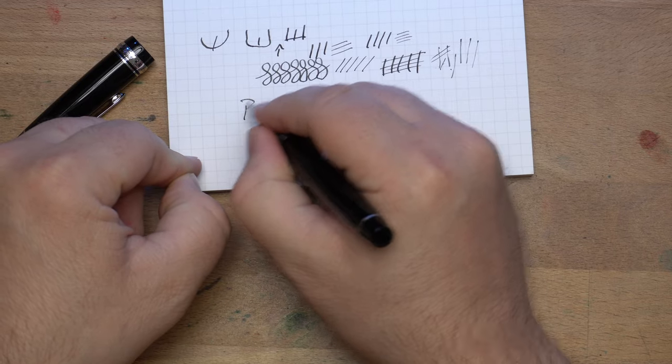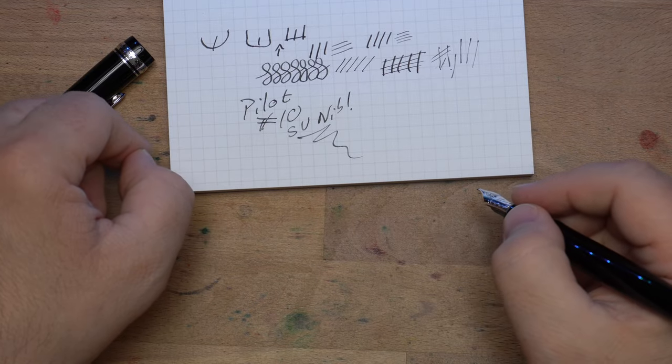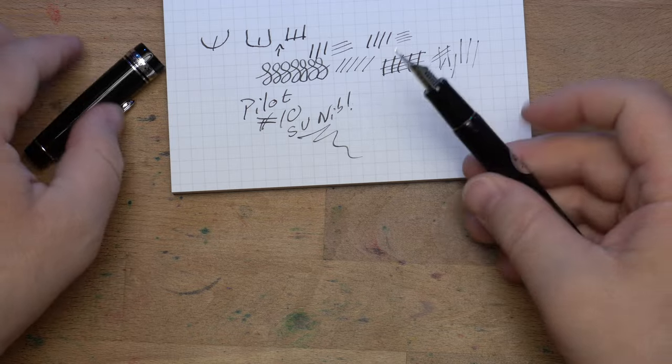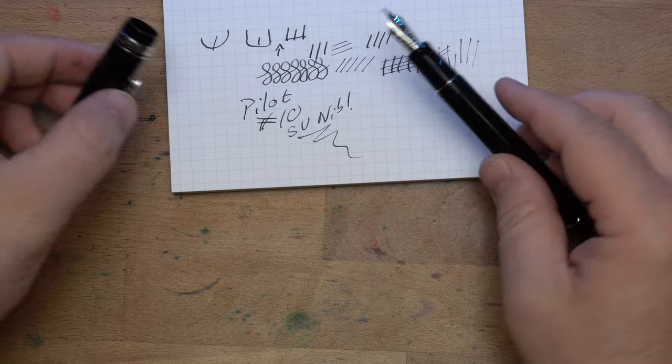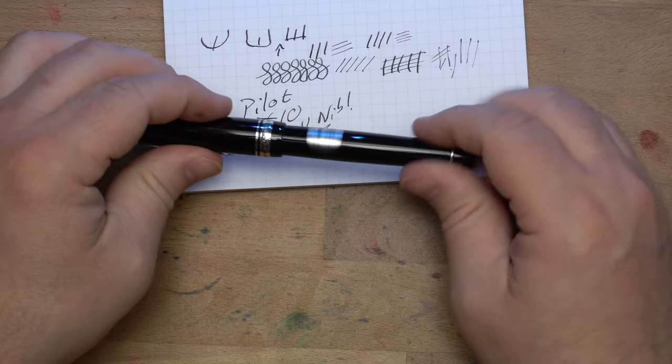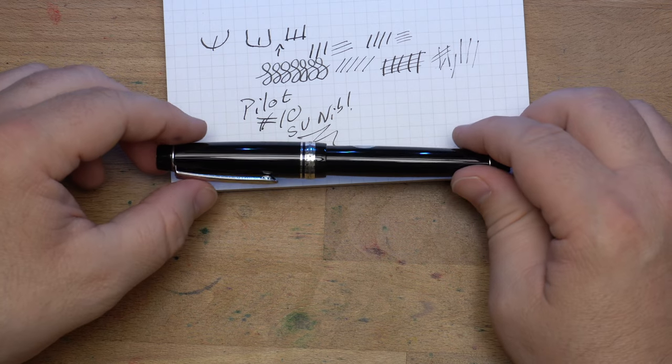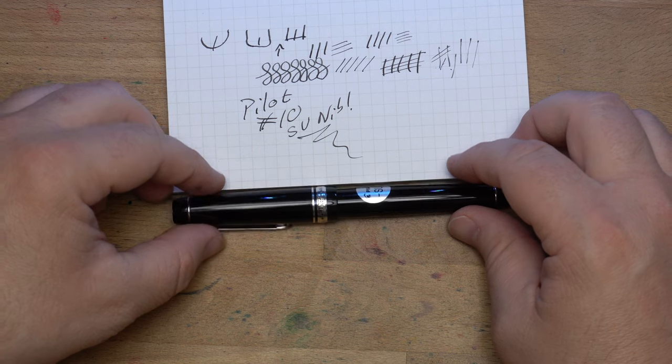But Pilot's number 10 SU nib is very nice for writing things that'll look a little bit fancy and you'll feel fancy writing them. So go check out the Pilot Custom Heritage 912 with its SU nib and all of the other nib options wherever pilots are sold. And thanks to Pilot for letting me borrow this pen because this has been a lot of fun to play with and I hope you'll learn something.